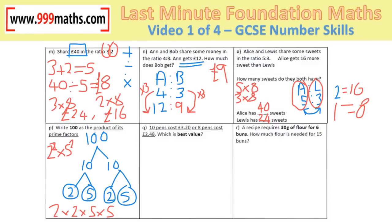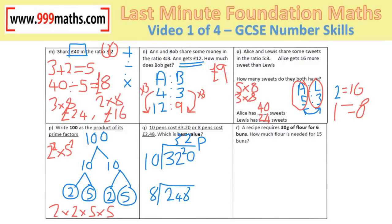10 pens cost £3.20, so £3.20 divided by 10 tells me one pen is 32 pence. 8 pens cost £2.48, so dividing by 8 tells me one pen in this pack is 31 pence. So the 8-pack is better value.